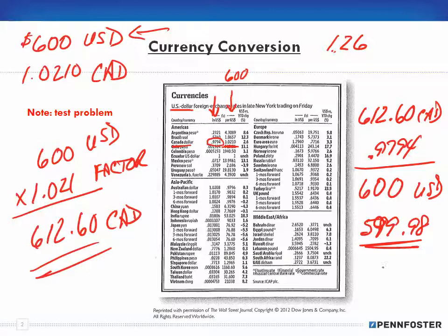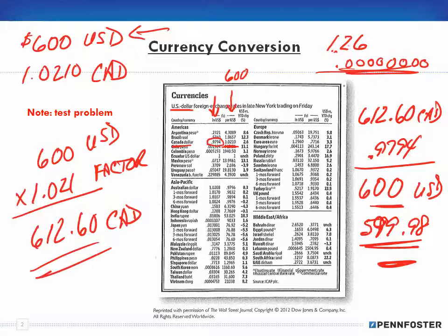As long as it's close enough, you know you're good. Realize that when you go out to a currency converter on the internet, they don't round to four digits — they end up rounding to like six or eight digits. That's why there's a slight difference. That's how you use this currency conversion chart.